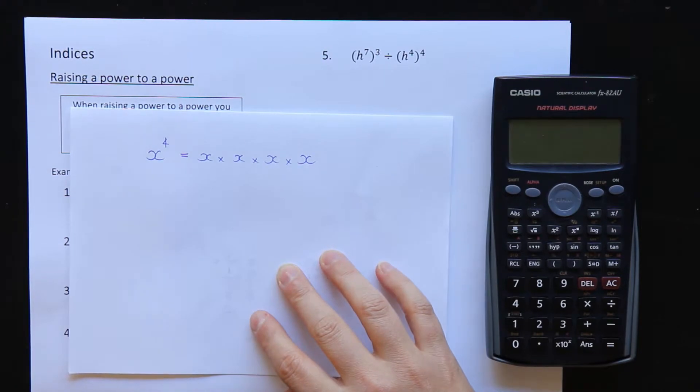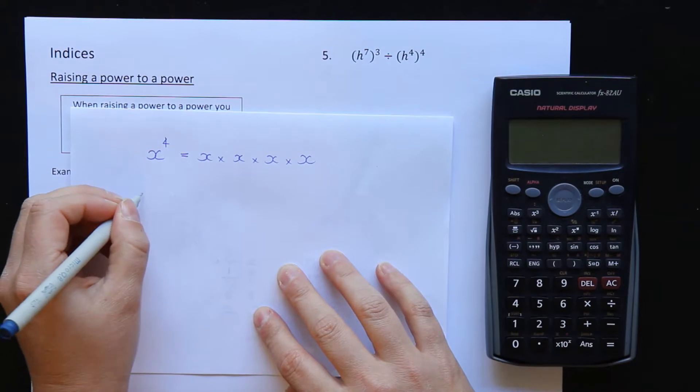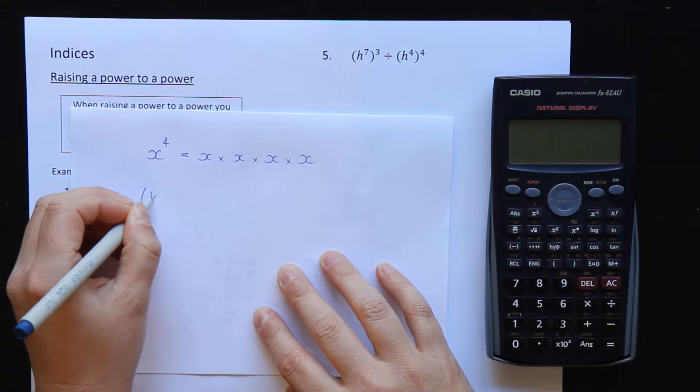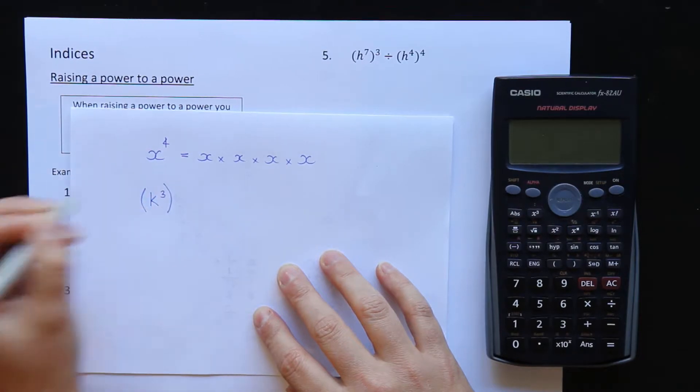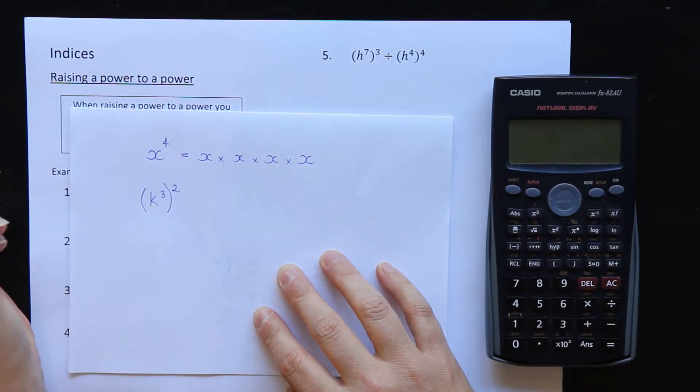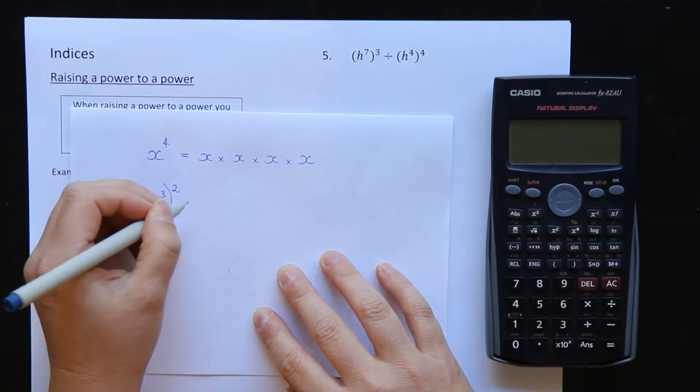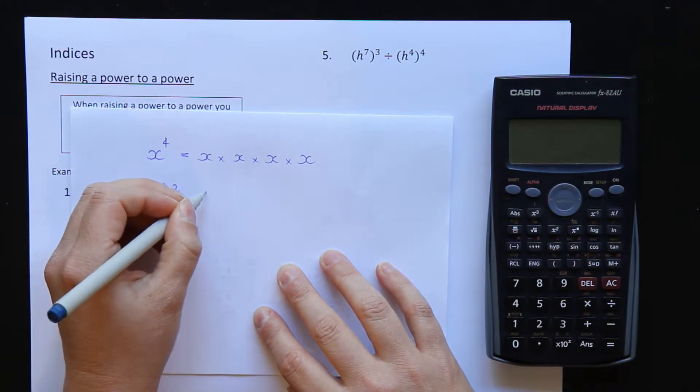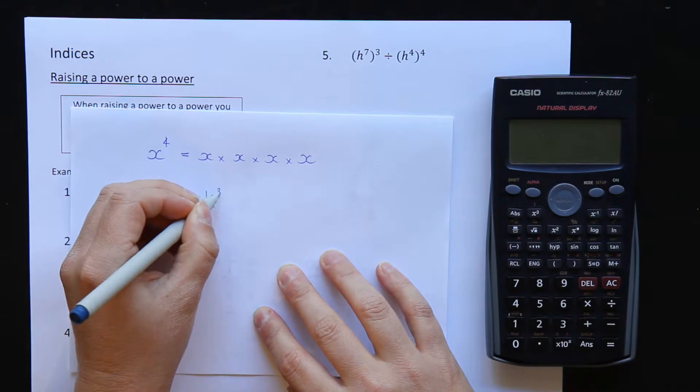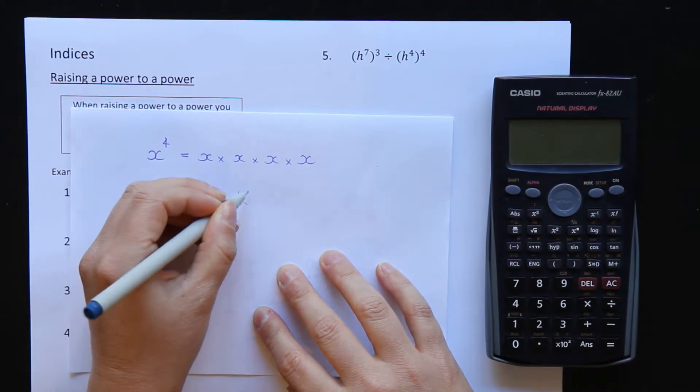Okay, so to help explain the rule that we're going to use today, we're going to be simplifying things that look like this. I might have k to the power of 3 in brackets, all squared. That's the power to a power. Now I can expand that like I did the one up here. This squared means that I have two of these in the brackets. I have k to the power of 3 times k to the power of 3.